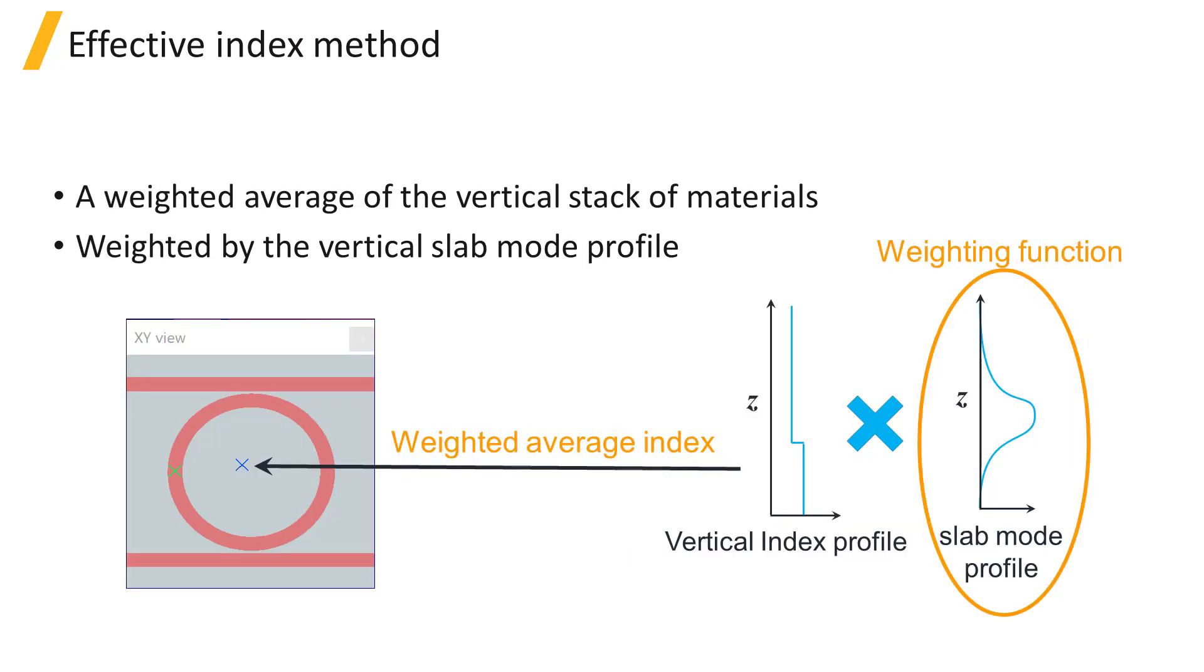One way to think about the effective 2D material at each XY point is basically a weighted average of the vertical stack of materials at that point, weighted by the vertical slab mode profile. The actual calculation is more complex, accounting for things like field polarization.